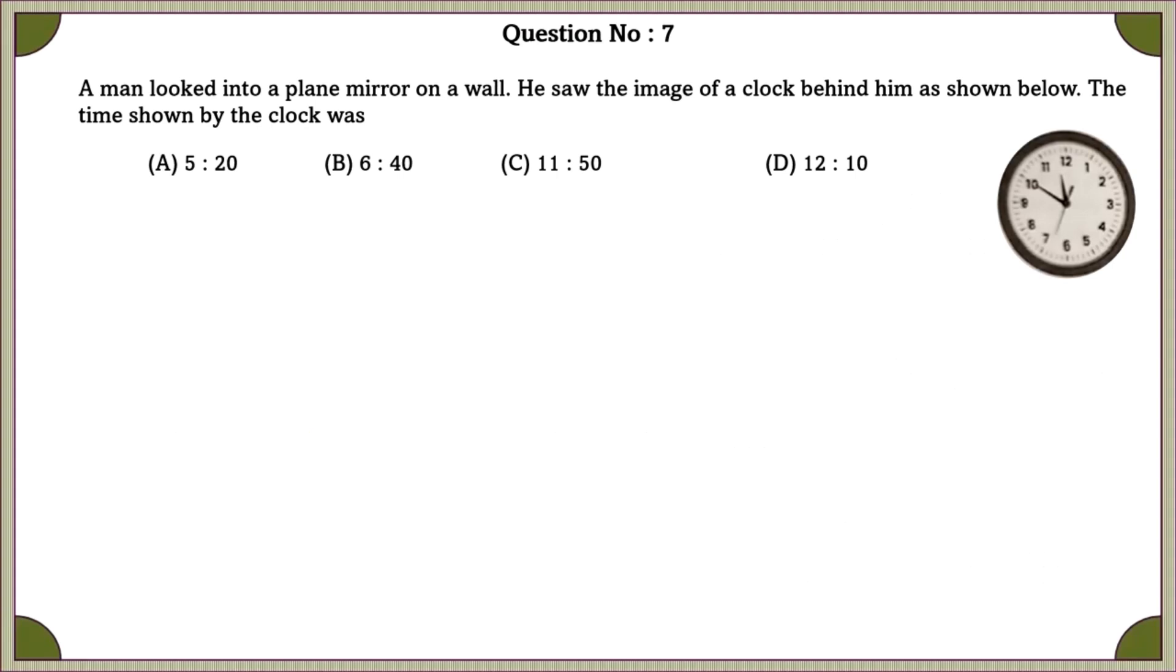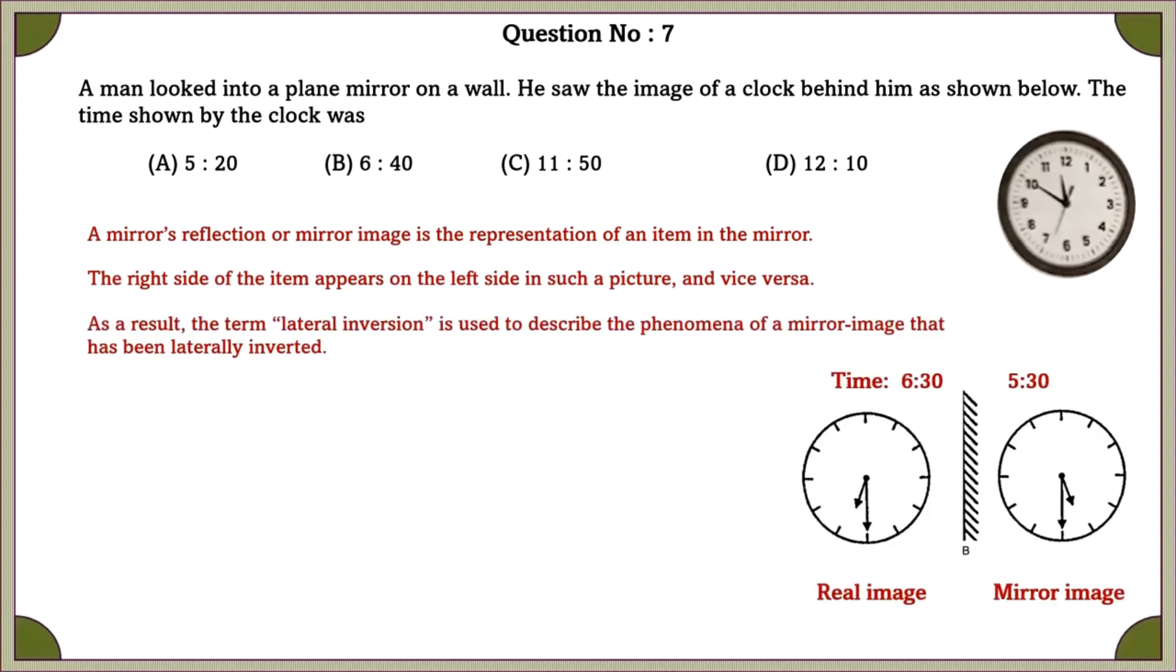Question number 7. A man looked into a plane mirror on a wall. He saw the image of a clock behind him as shown below. The time shown by the clock was? A mirror's reflection or a mirror image is the representation of an item in the mirror. The right side of the item appears to the left side in such a picture, and vice versa. As a result, the term lateral inversion is used to describe this phenomenon of a mirror image that has been laterally inverted. For each clock-based mirror image, if the clock has 12 hours,